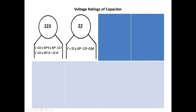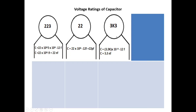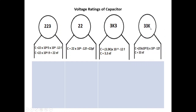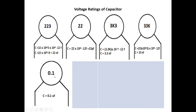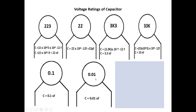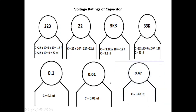As a second example, '22' written on a capacitor means 22 × 10⁻¹² farads, which is simply 22 picofarads. Then '3k3' — here k stands for kilo — means 3.3 × 10³ × 10⁻¹² farads, giving 3.3 nanofarads. '33k' means 33 × 10³ × 10⁻¹² farads, giving 33 nanofarads. '0.1' represents 0.1 microfarads directly, '0.01' represents 0.01 microfarads, and '0.47' represents 0.47 microfarads.